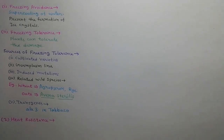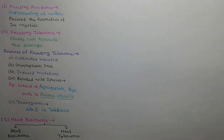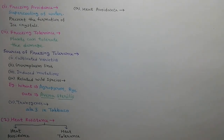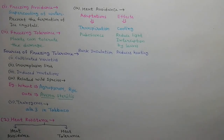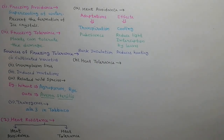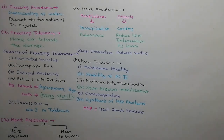Next is heat resistance, which is divided into two categories: heat avoidance and heat tolerance. For heat avoidance, plants have the following adaptations: transpiration for cooling, pubescence which reduces light interception by leaves, and bark insulation which reduces heating. For heat tolerance, plants have adaptations including membrane stability, stability of photosystem II, photosynthetic translocation, stem reserve mobilization, osmoregulation, and synthesis of HSP (heat shock) proteins.